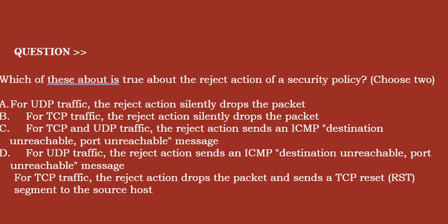Option D: for UDP traffic, the reject action sends an ICMP destination unreachable port unreachable message. Option E: for TCP traffic, the reject action drops the packet and sends a TCP reset RST segment to the source host. Correct answer is option D and option E.